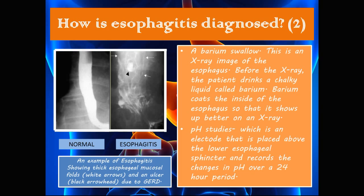A barium swallow is an x-ray image of the esophagus in which the patient drinks a chalky liquid substance called barium before the x-ray. The barium coats the inside of the esophagus so it shows up better. On the left you can see a normal esophagus, and on the right you can see esophagitis showing thick esophageal mucosal folds indicated by white arrows, and an ulcer where barium collects, making it more radiopaque and visible on the x-ray.